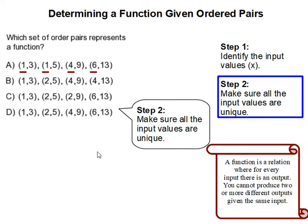Step 2. Make sure all the input values are unique. That means we are applying this rule where you cannot produce two or more different outputs given the same input. Here I have the same input of 1 and that produces two or more different outputs. Therefore, A is not a function.